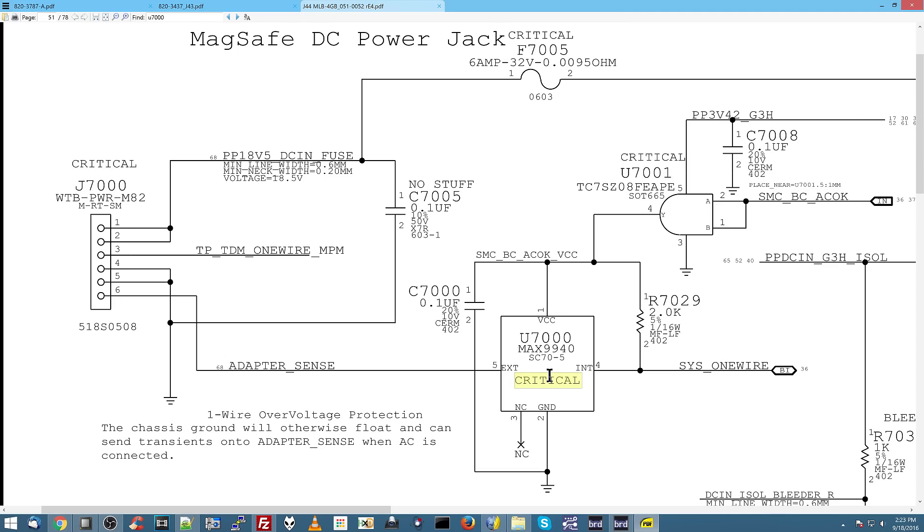Now, this is going to this chip, U7000. It has a couple of pins here. It has GND, ground. That's not going to be for anything because ground is nothing. It has XT. It has INT, which goes to SIS1wire. And then it has VCC.